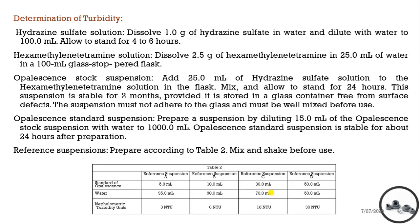First is determination of turbidity. We prepare hydrazine sulfate solution and hexamethylene tetramine solution, and by combining these two solutions in different compositions we prepare an opalescence stock suspension. We then prepare opalescence standard suspensions by diluting the stock suspension with water in different compositions, preparing 4 different suspensions: A, B, C, and D.